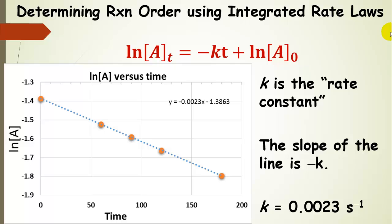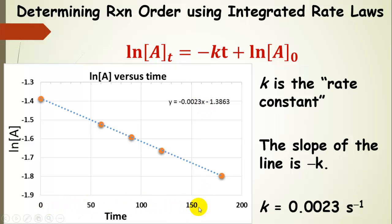Looking more closely at the fitted line that Excel produced: the slope is negative K, so the rate constant K equals 0.0023 seconds inverse for this first order process. The Y-intercept is the natural log of the initial concentration of A, and X is time T. Because plotting the natural log of the concentrations versus time yielded a straight line, we conclude that the reaction fits first order kinetics.